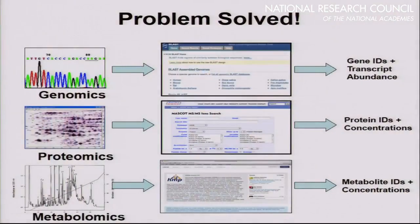The initial problem with metabolomics was that we didn't have tools to take a spectrum, submit it, and get an answer. Thanks to work we've done and many other groups, we now have those tools — the BLAST or Mascot equivalent for metabolomics. These are now becoming available, which should enable much faster, higher-throughput, and cheaper metabolomic characterization.